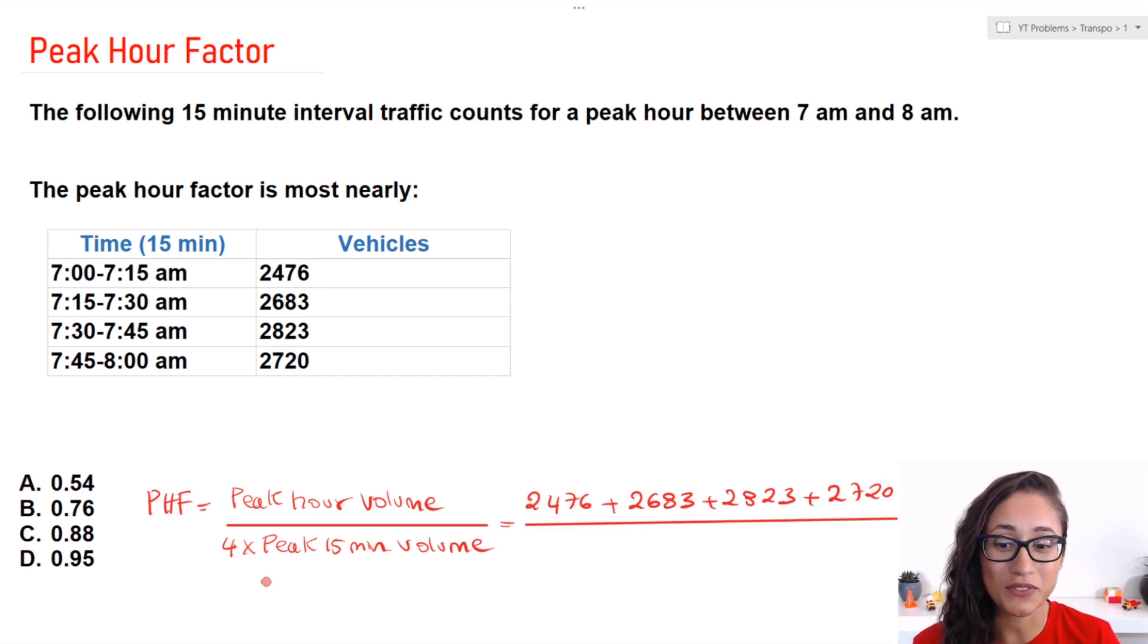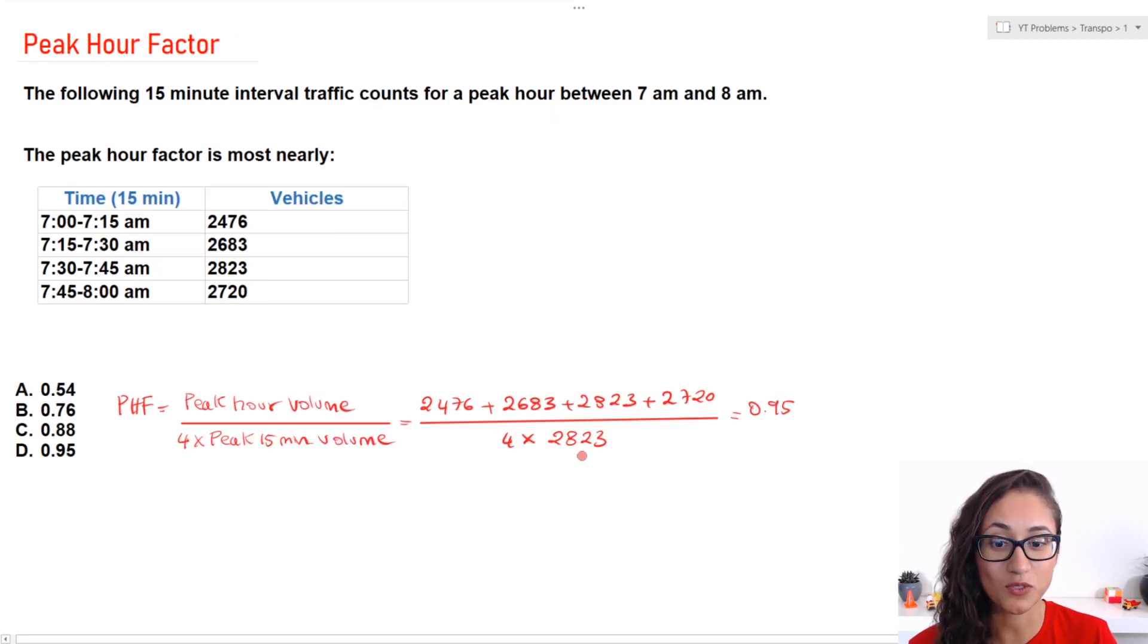Now, to calculate the peak 15 minute volume, it's actually pretty simple. All we got to do is look at the interval where we have the maximum number of vehicles. So here, between 7:30 and 7:45 a.m., we have the maximum number of vehicles, which is 2,823. So that's what we have here.